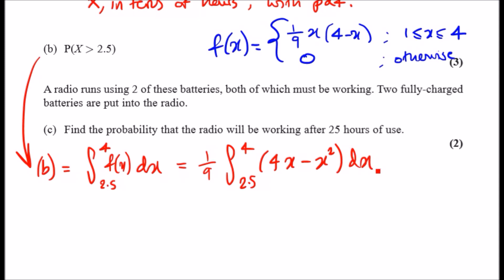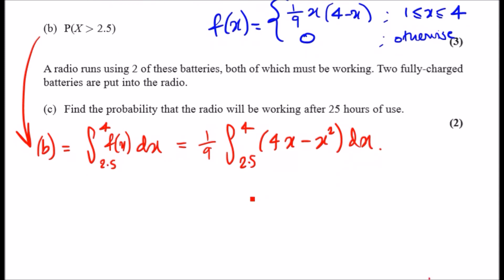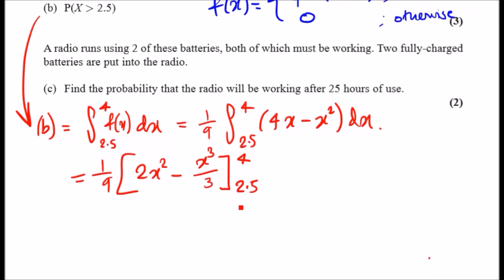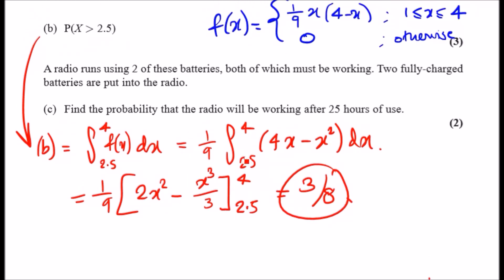Integrating all of this, 4x becomes 4x²/2—the 4/2 cancels, so you get 2x² minus x³/3. Evaluate from 2.5 to 4. Plug in 4, find a value, then plug in 2.5, find another value. You should get 3/8. Voila, that's it! Let's move on to the next one.